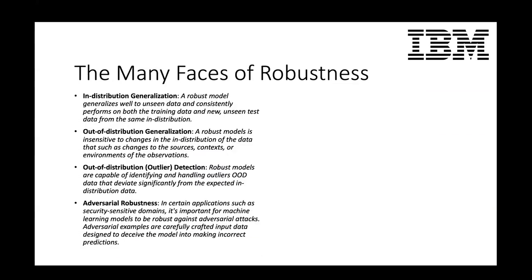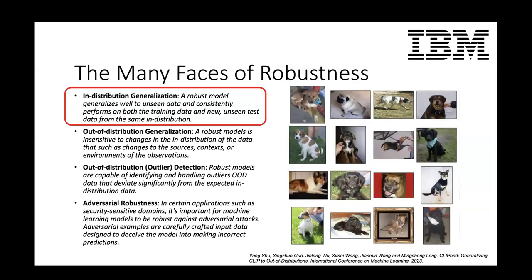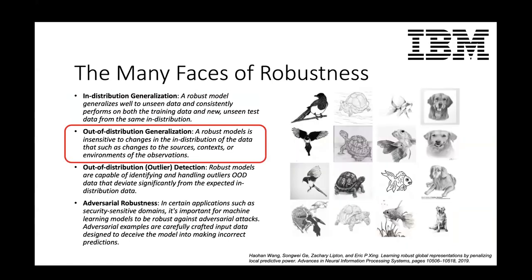There are many different aspects to robustness — here are four classical examples. The most classical setting is in-distribution generalization: you have a model that you've trained, and now you have a testing environment you're testing your model towards. There's also OOD generalization, another form of robustness, where you have a trained model and you're generalizing with your in-distribution sample. For example, you have ImageNet as your training in-distribution, but now you're testing on sketch versions of the ImageNet samples.